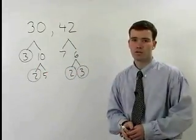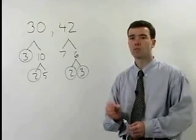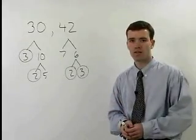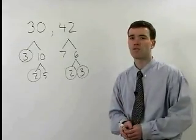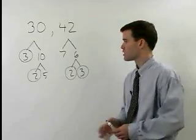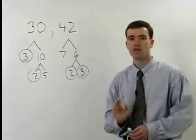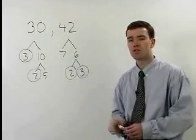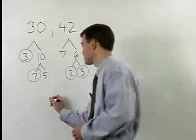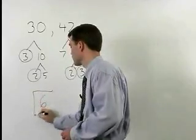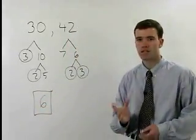Once you've found the factors that match up, simply multiply those factors together to get the greatest common factor of the two numbers. So since the 3s match up and the 2s match up, the greatest common factor is 3 times 2 or 6. And that's the answer.